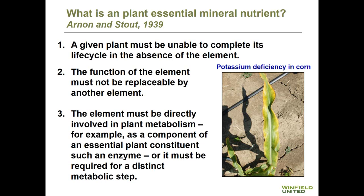The second criteria is that the function of the element must not be replaceable by another element — zinc or magnesium cannot replace the role of nitrogen within the plant, and vice versa. And finally, essential elements must be directly involved in plant metabolism — as a component of an enzyme or required for a distinct metabolic step. Many micronutrients like zinc, manganese, and copper are involved in enzyme systems, while other nutrients like nitrogen and potassium are heavily involved in plant metabolism.